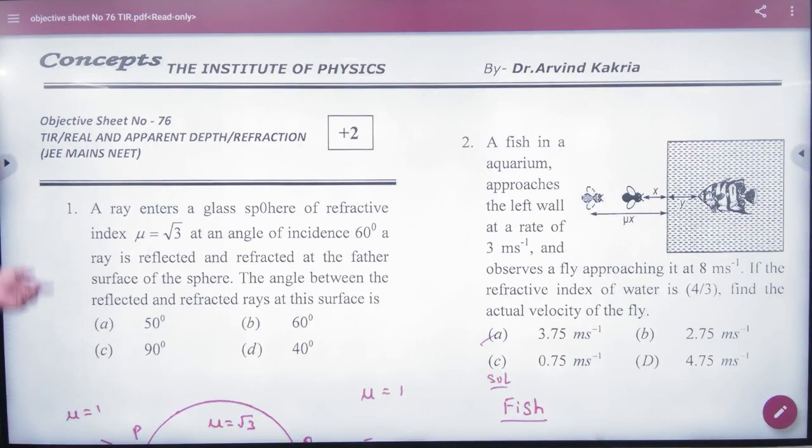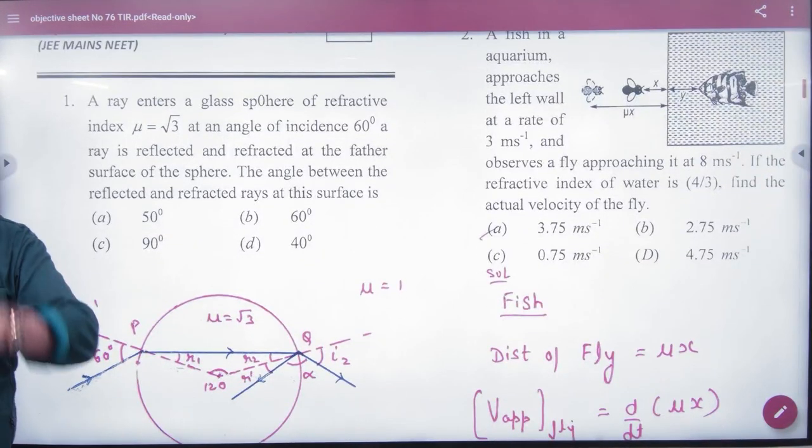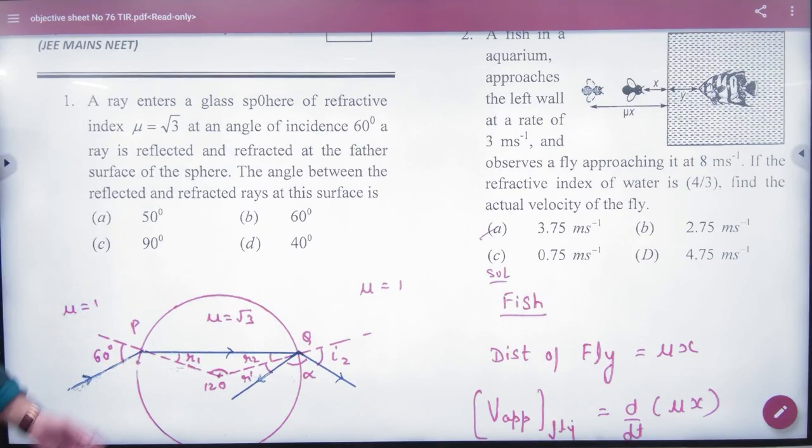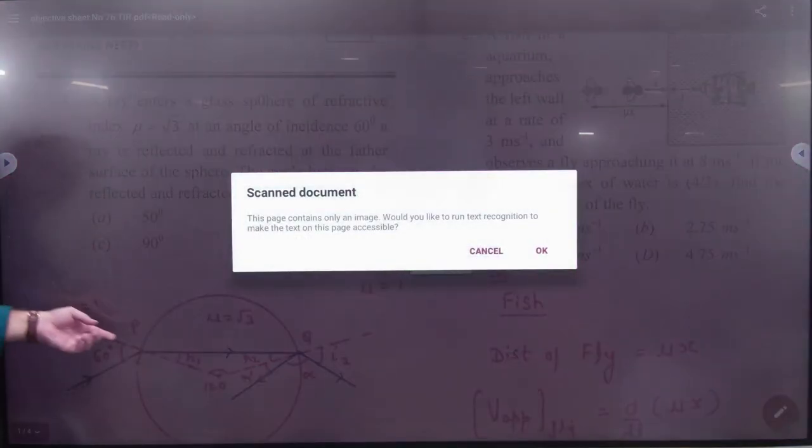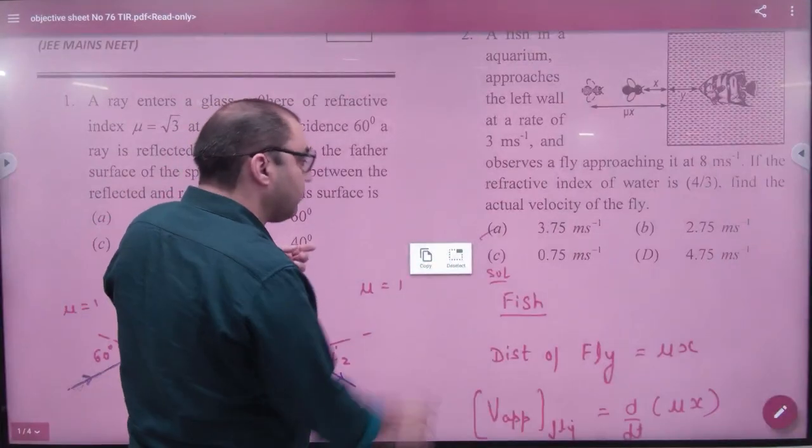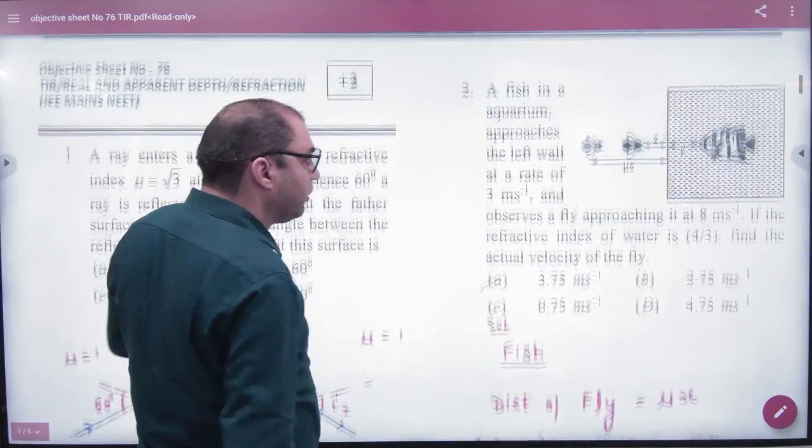TIR's objective sheet, question number one. How many of you have tried this sheet? Try. Question number one made out. This was done.